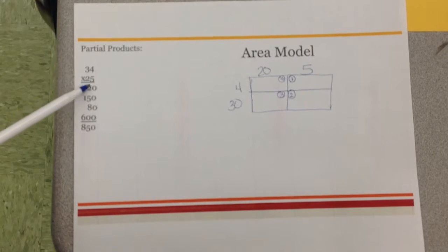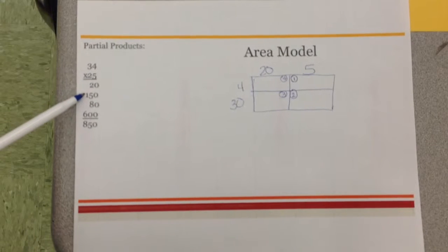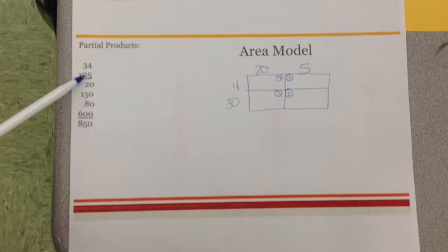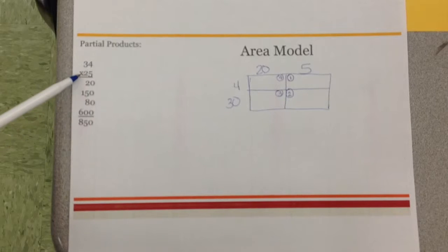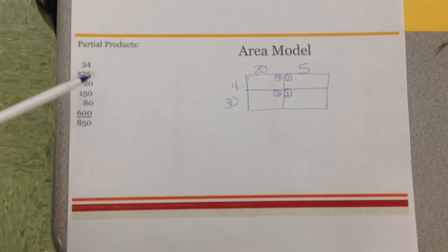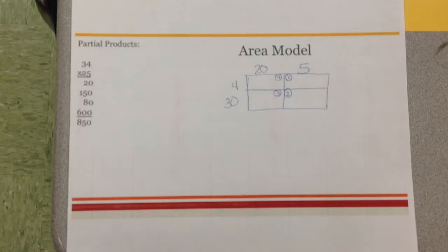Five times four is 20. Five times 30 is 150. 20 times four is 80. 20 times 30 is 600, and then add them up, and your answer would have been 850.